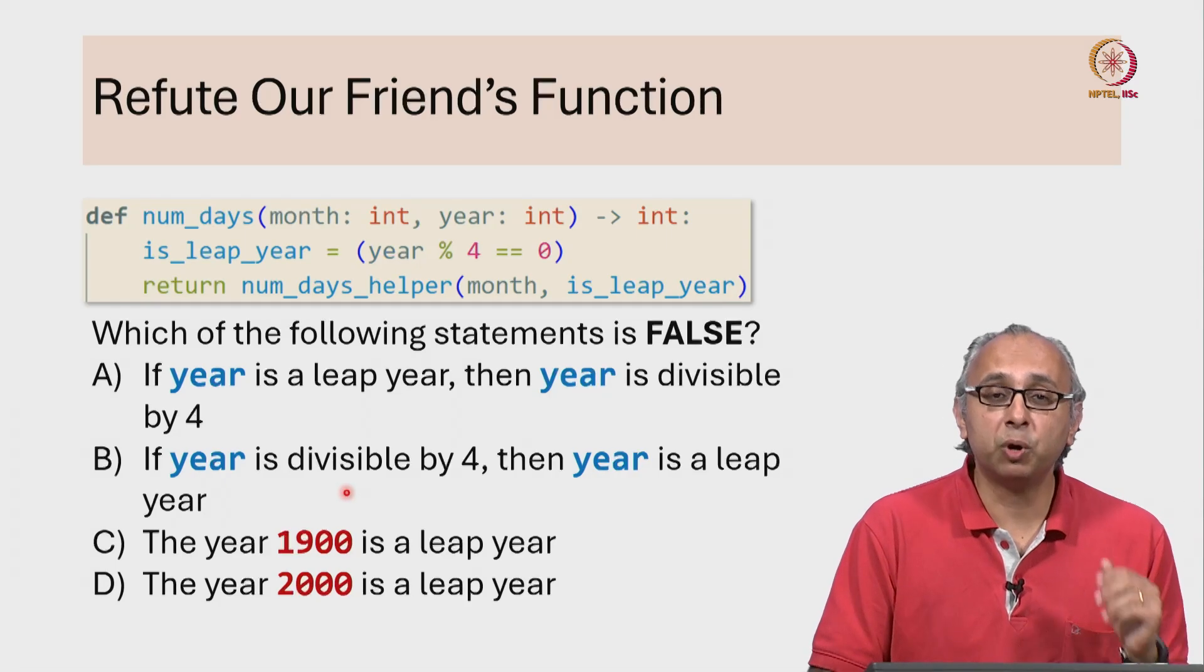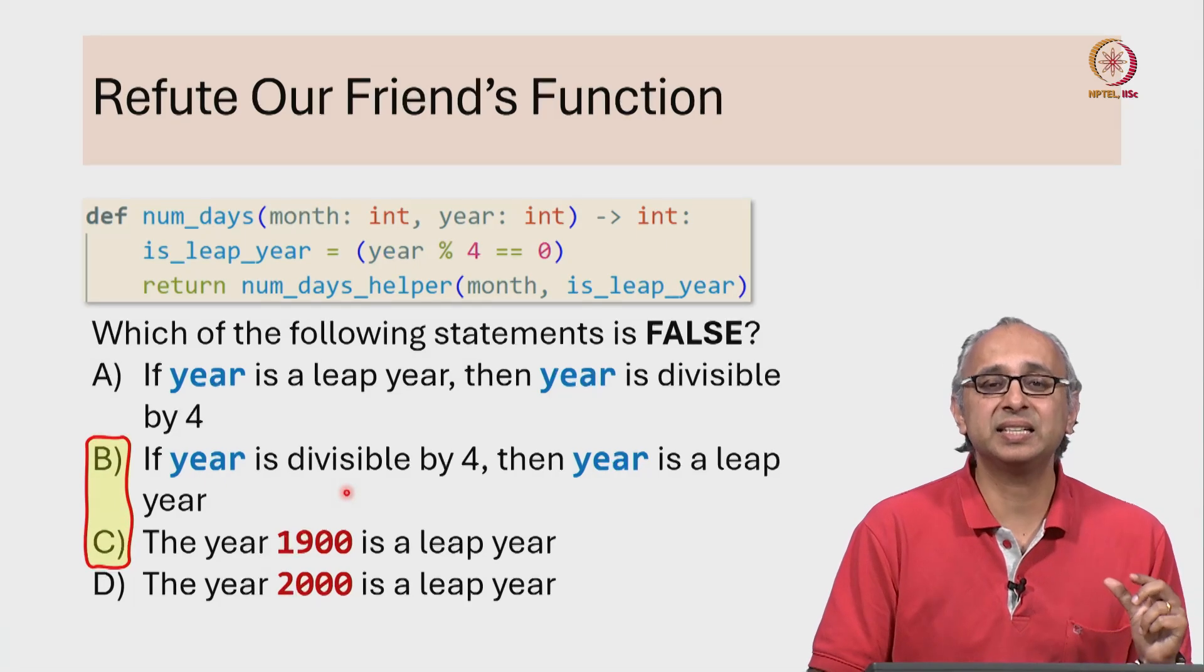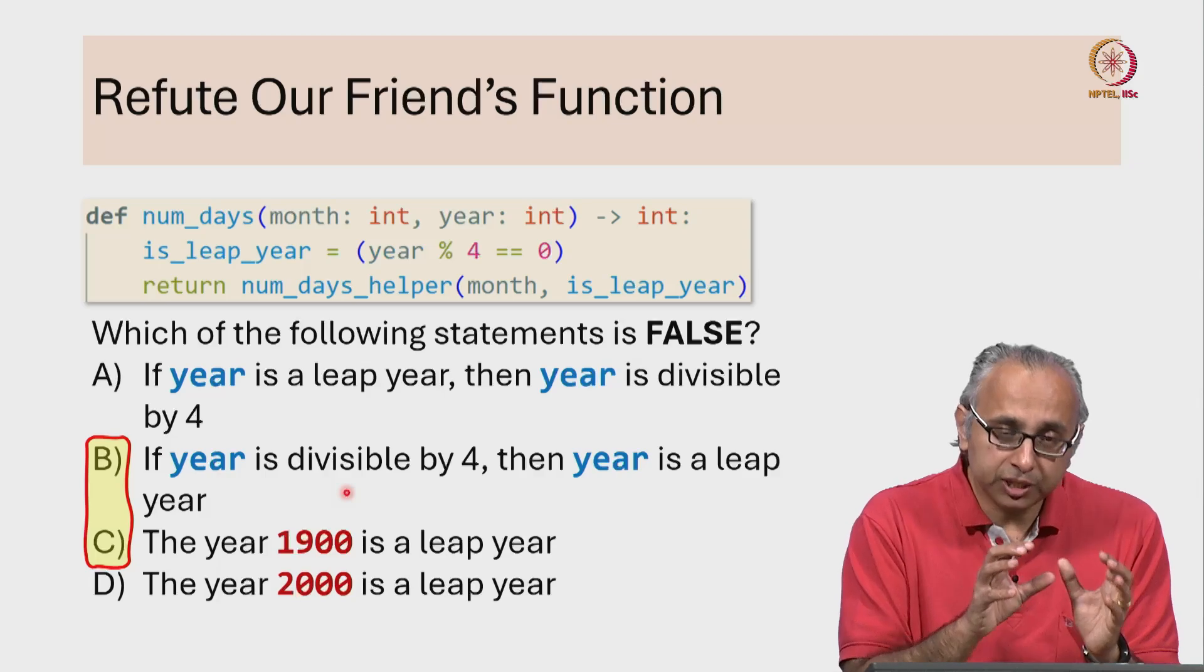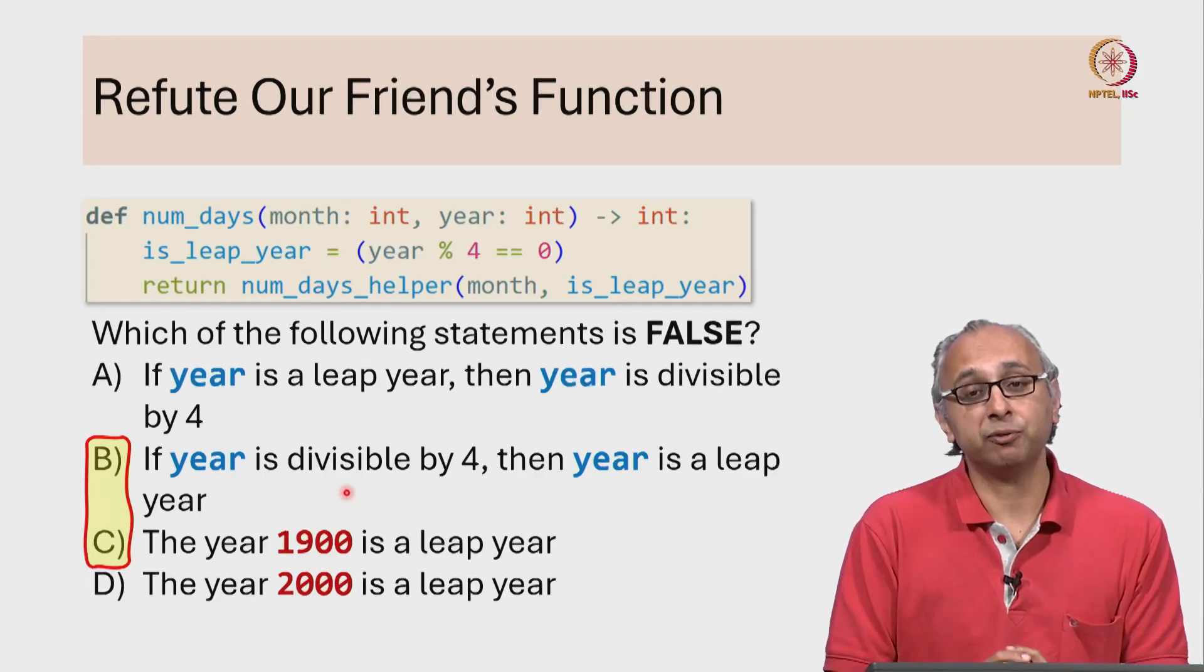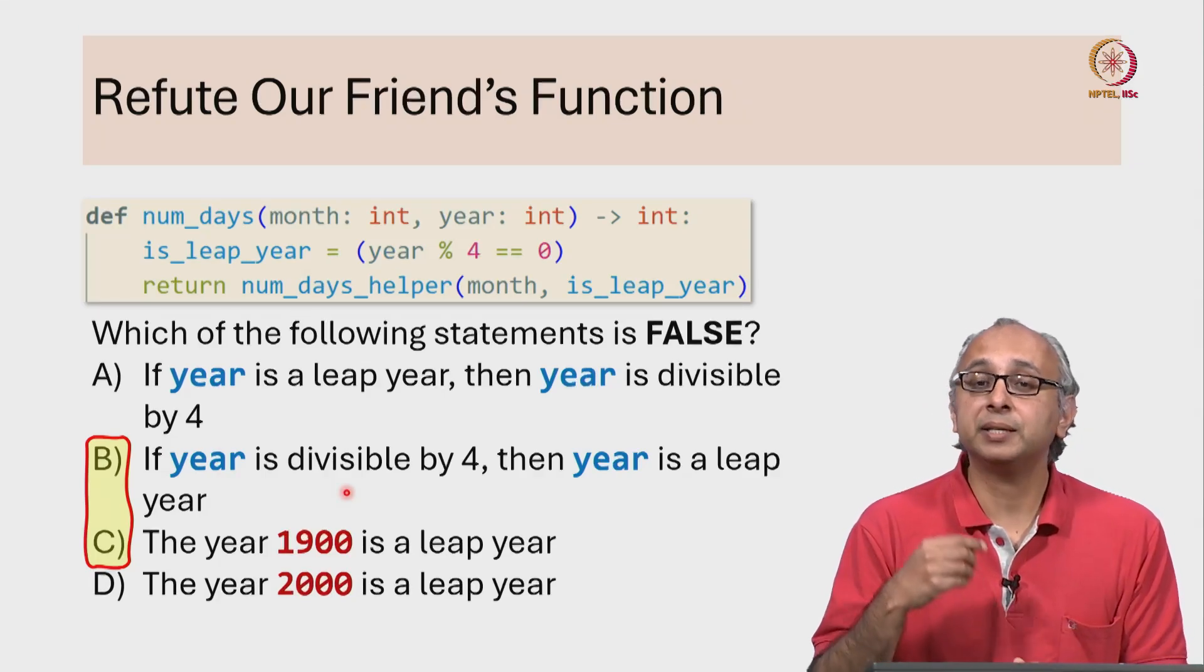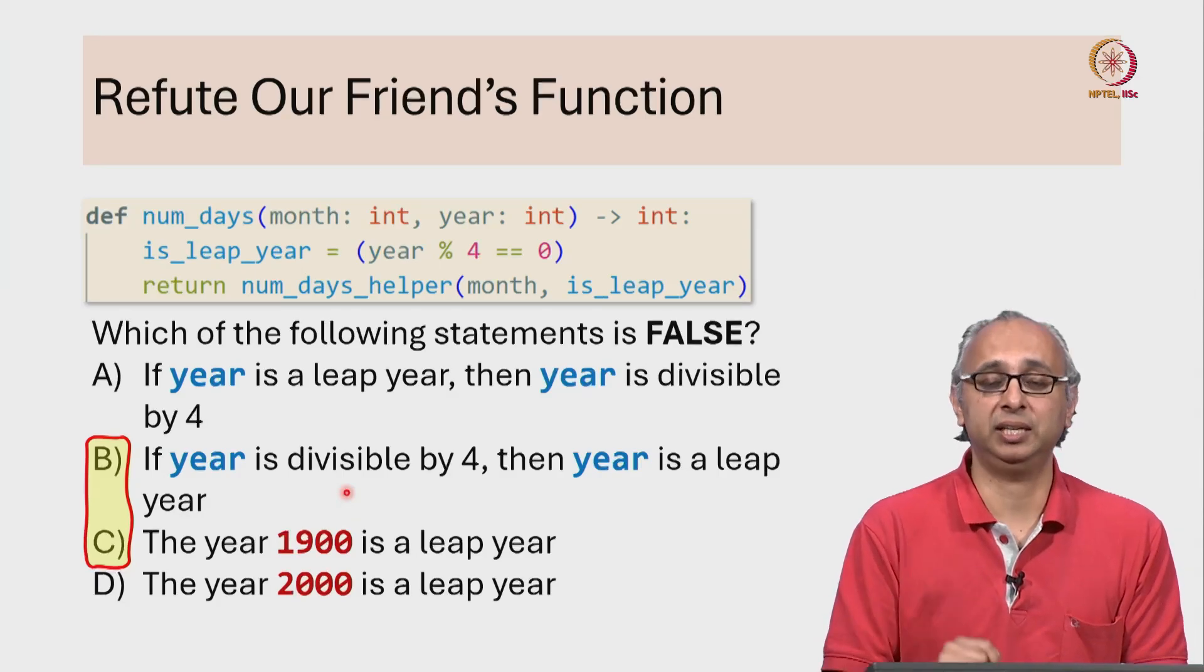So in this case, both statements B and C are incorrect because the year 1900 is divisible by 4 but that is not a leap year.